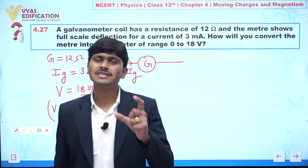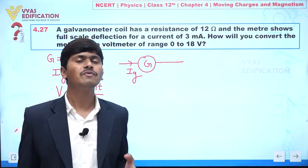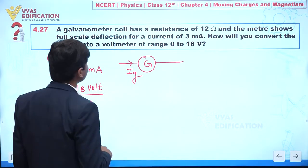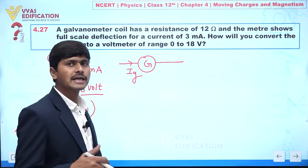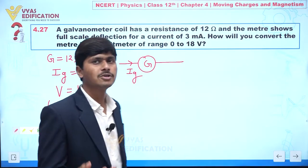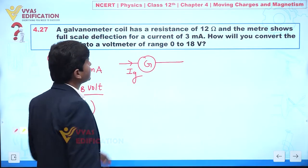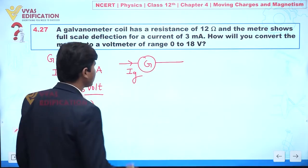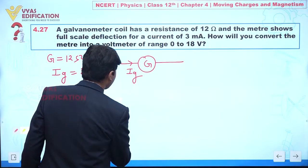But actually this voltage is comparatively low. We want to increase the range of that voltage. In a galvanometer, if we connect a high resistance in series, this is actually converting into a voltmeter of range 0 to 18 volt.